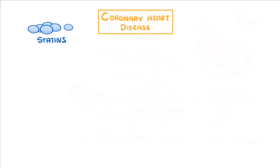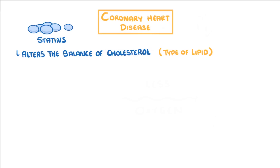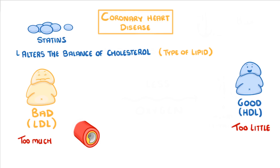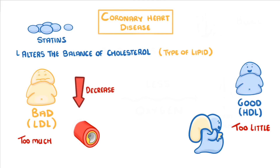A statin is a medication that alters the balance of cholesterol in your bloodstream. Cholesterol is a type of lipid that we all need in order to be healthy; however, it comes in two different forms — the bad LDL type and the good HDL type. The problem is that most people have too much of the bad type, which can cause fatty deposits in our coronary arteries to form, while we tend to have too little of the good cholesterol, which can help us get rid of those fatty deposits. Statins are able to decrease the amount of bad cholesterol in our blood and increase the good type, which lowers the overall risk of not only coronary heart disease but also many other diseases like strokes and heart attacks.